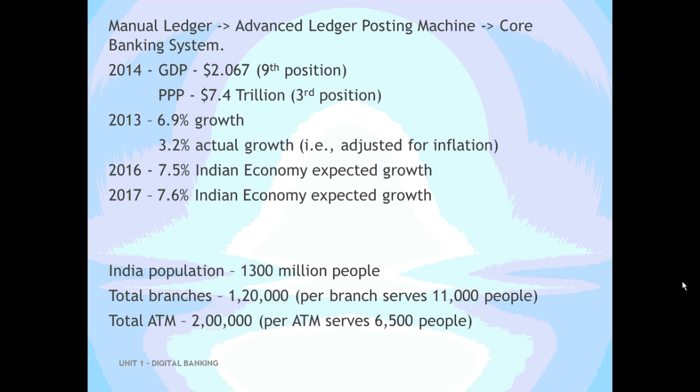The total population of India stood at around 1,300 million. The total number of branches available in India are 1,20,000, with each branch approximately serving 11,000 people. The total number of ATMs stood at 2,00,000, with each ATM serving approximately 6,500 people.